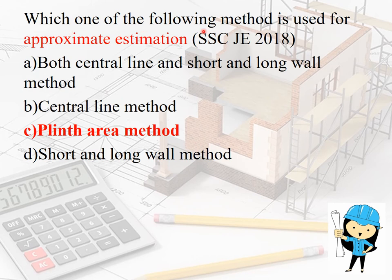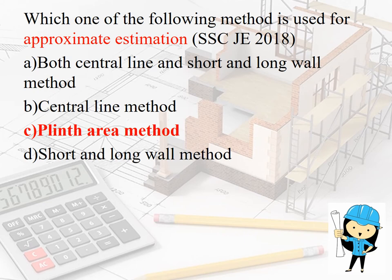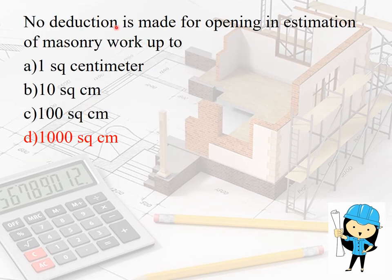For approximate estimation of a building, the methods used include: length-area method, cubic-area method, cubic method, and cost comparison method. This was asked in SSC JE 2018. The centerline method, long-wall short-wall method belongs to the detailed estimation method.